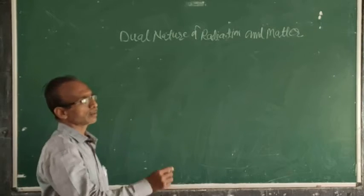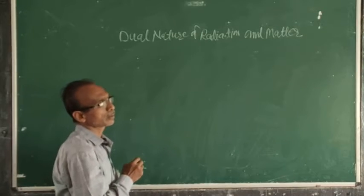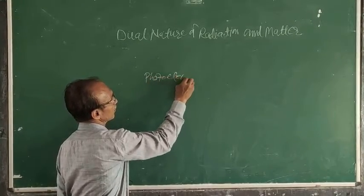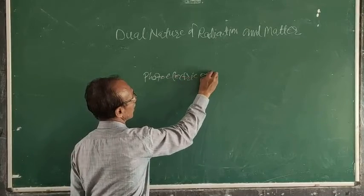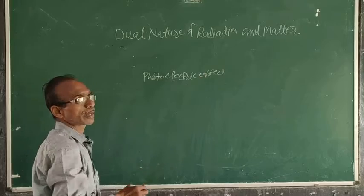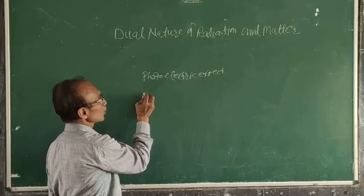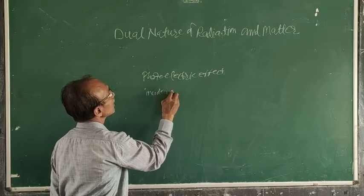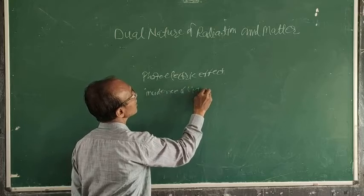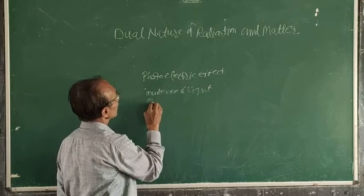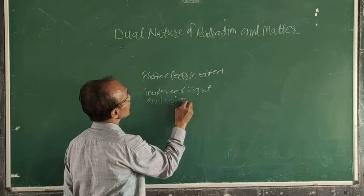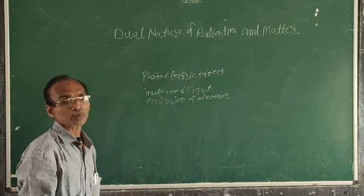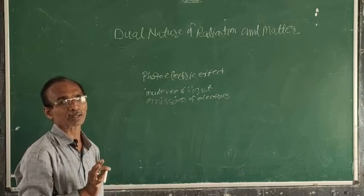Up to this moment, we have learned the photoelectric effect. In this photoelectric effect, there are two phenomena. One phenomenon is the incidence of light, resulting in the emission of electrons. That process is known as the photoelectric effect.